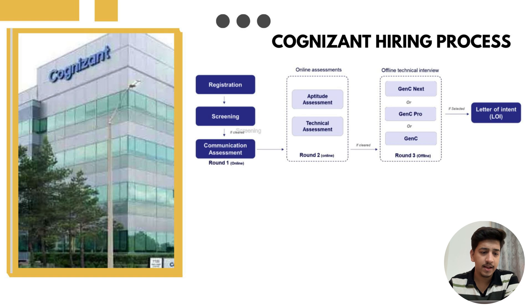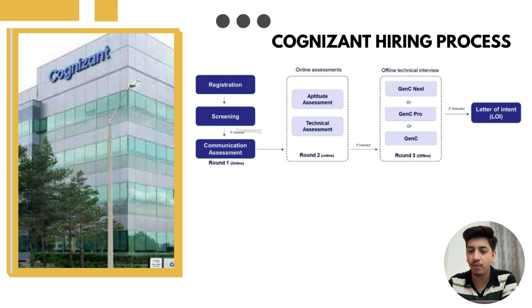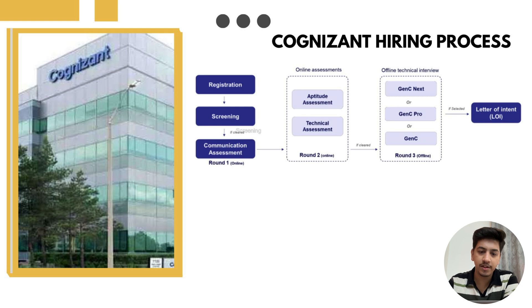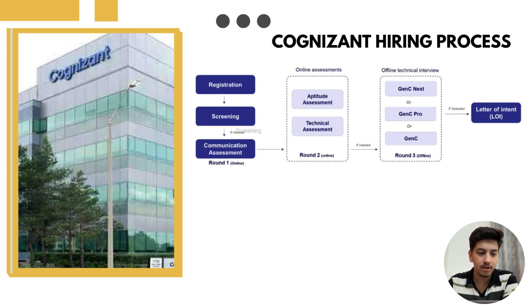Step two is the screening round. After registration, Cognizant does an initial screening based on your academic scores, resume, and college eligibility. Once shortlisted, you will receive the assessment details via Superset email or a dashboard notification.